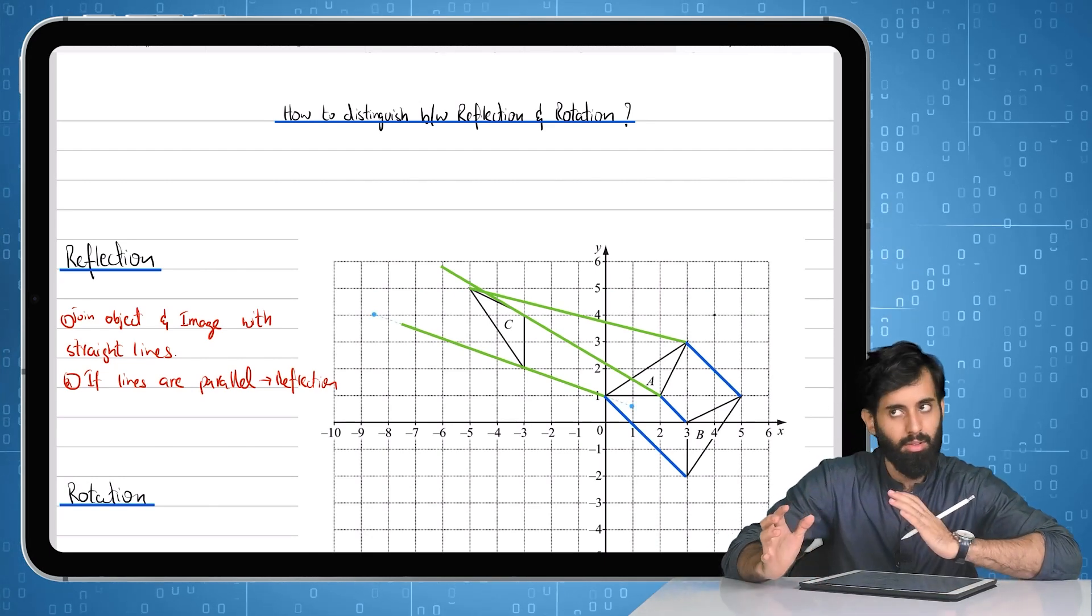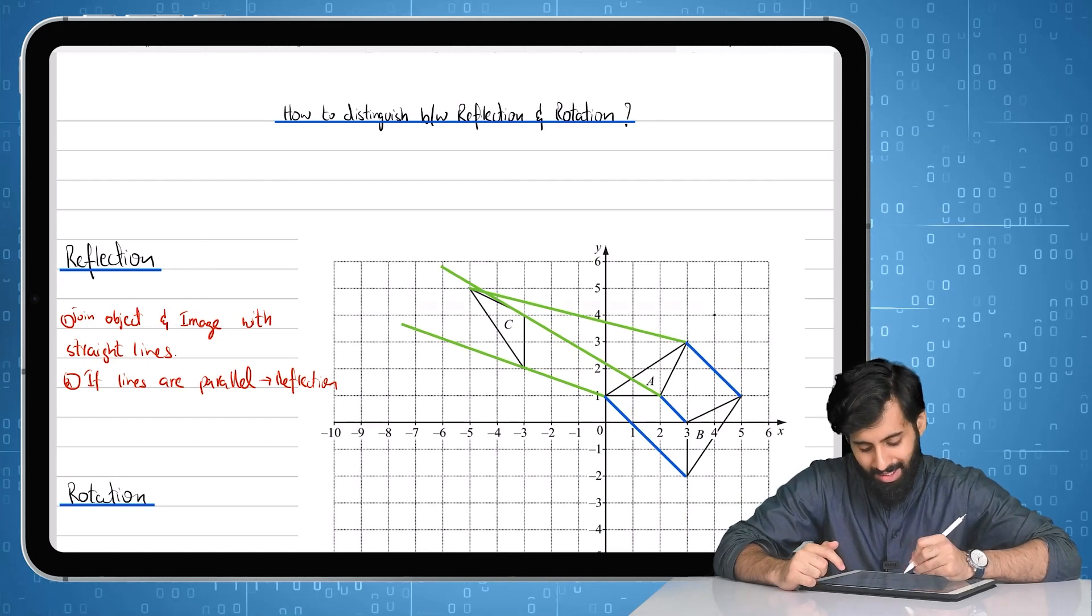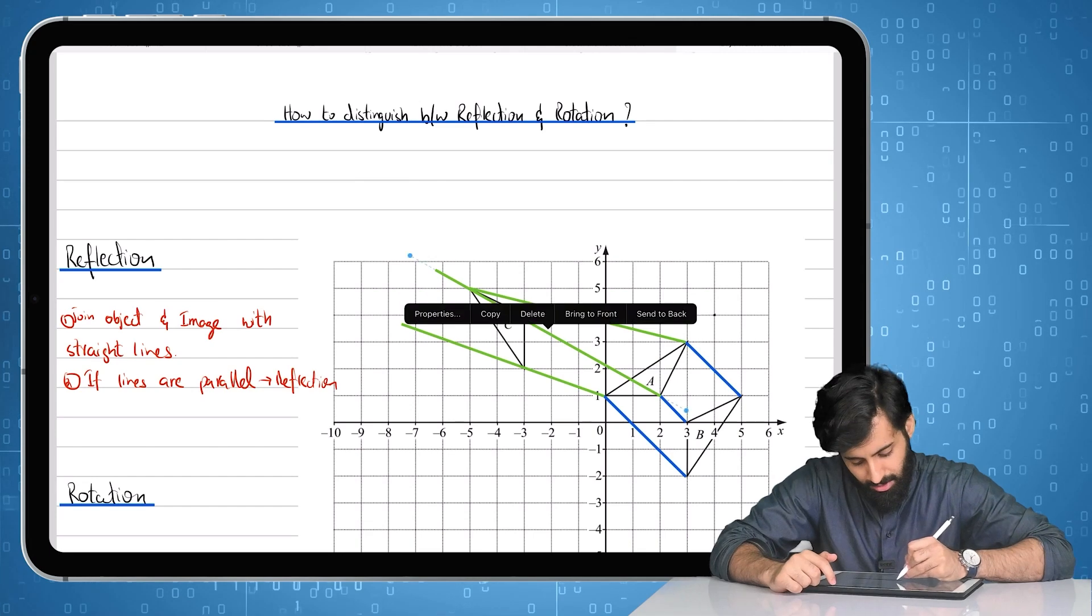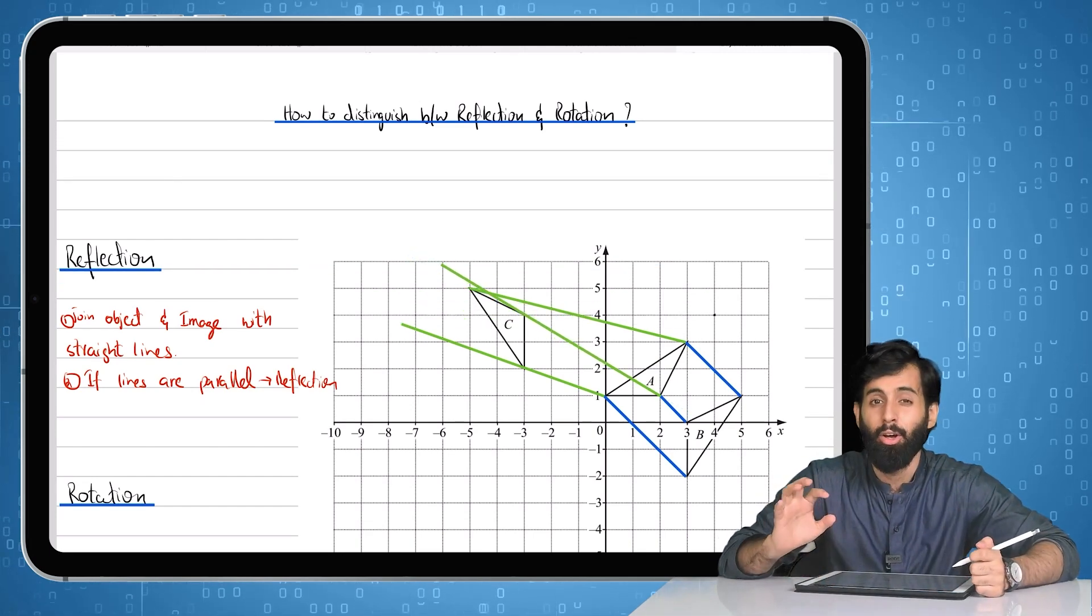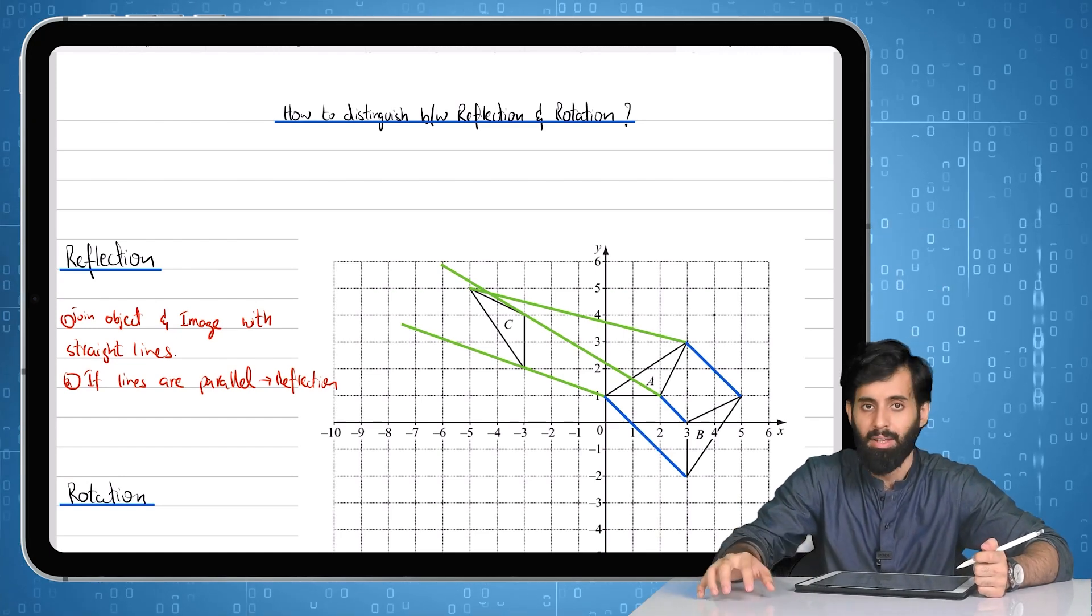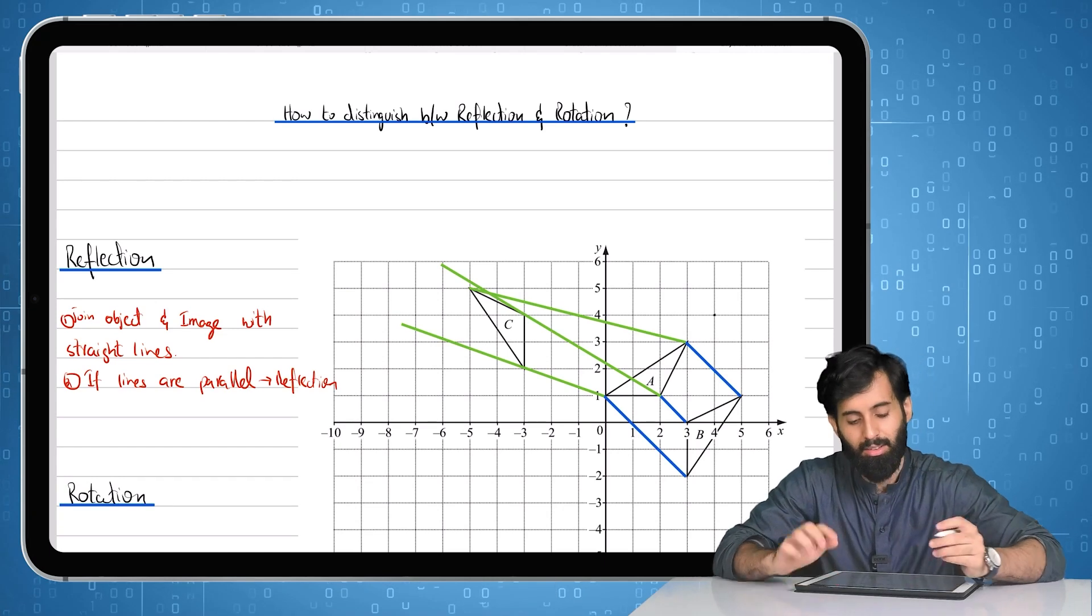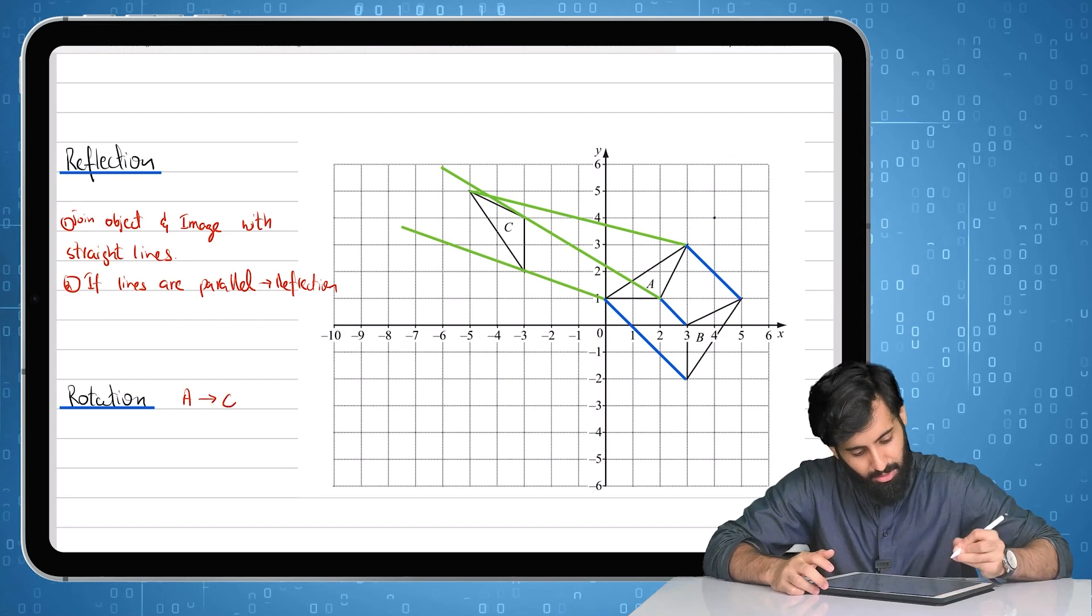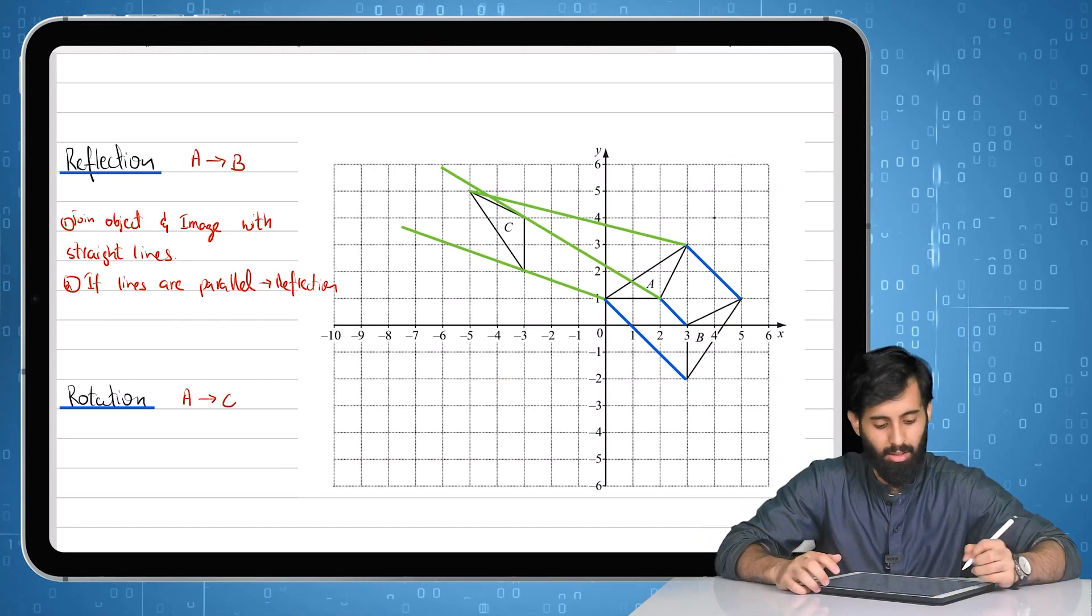And any two of the three, so when that happens it clearly means, it clearly suggests that this is not a reflection. This is definitely a rotation. So that means as far as A onto C is concerned, this is basically a rotation. So I should write it over here that A to C is a rotation and A to B is a reflection.